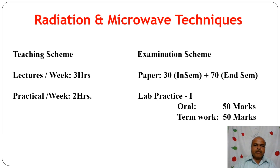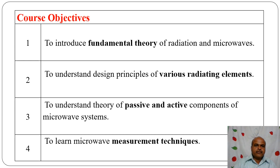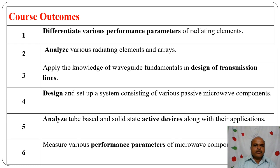Course objectives: first, to introduce fundamental theory of radiation and microwaves; second, to understand design principles of various radiating elements; third, to understand theory of passive and active components of microwave systems; fourth, to learn microwave measurement techniques. Course outcomes: first, to differentiate various performance parameters of radiating elements; second, to analyze various radiating elements scenarios; third, to apply knowledge of waveguide fundamentals in design of transmission lines; fourth, to design and set up a system consisting of various passive microwave components; fifth, to analyze tube-based and solid-state active devices along with their applications; sixth, to measure various performance parameters of microwave components.